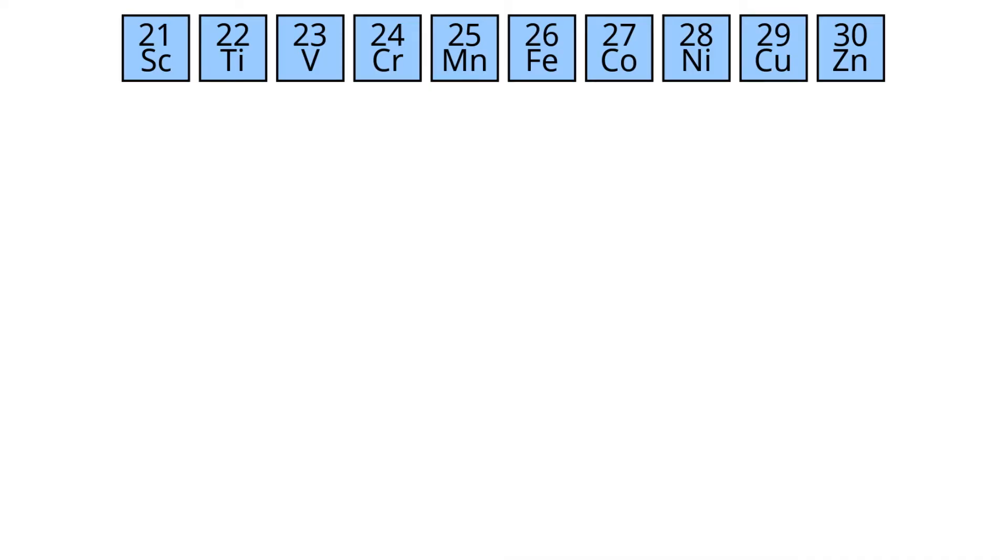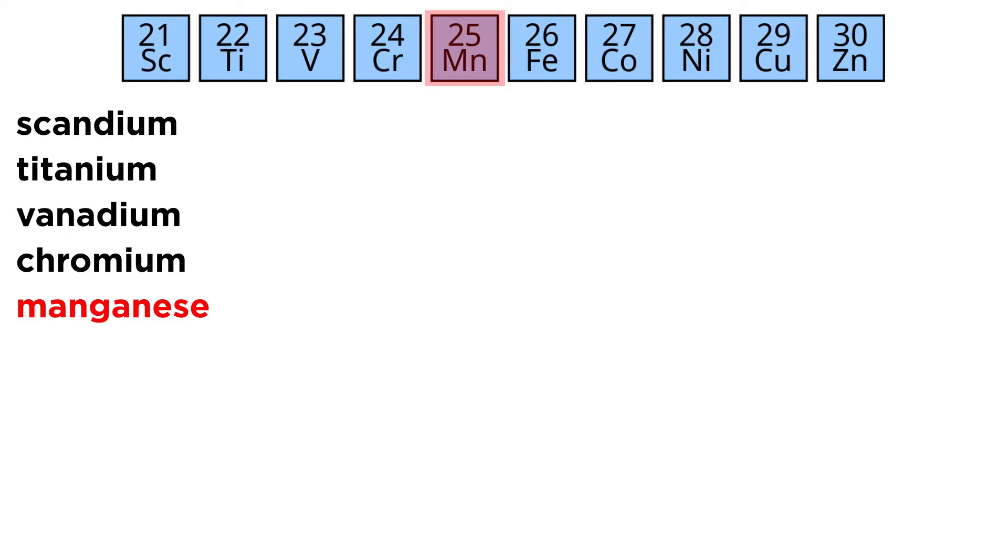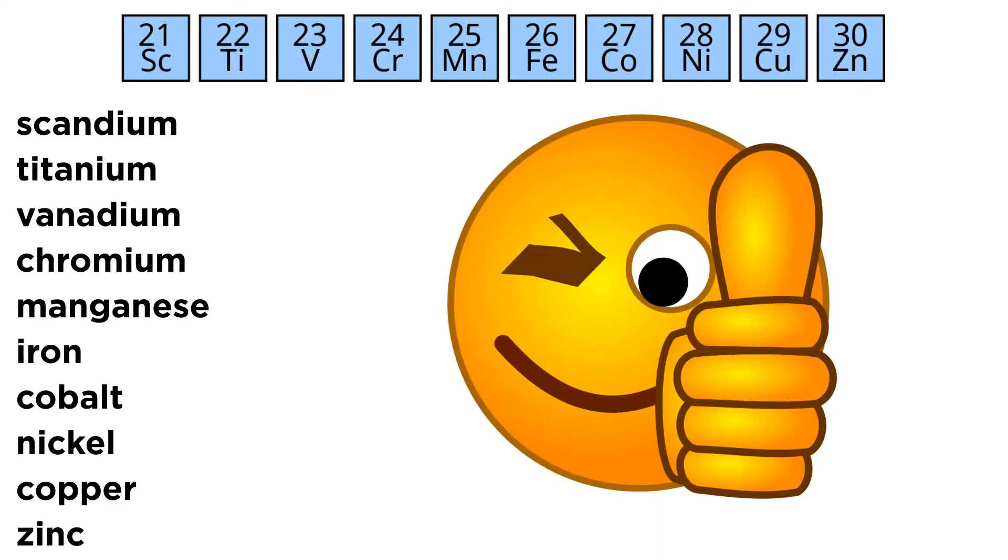Let's start by looking at this first row of the D block. From left to right we have scandium, titanium, vanadium, chromium, manganese, iron, cobalt, nickel, copper, and zinc. Most of these should be relatively familiar, whether from their common use in everyday materials, or from compounds we learned about in organic chemistry, while a few might be unfamiliar.